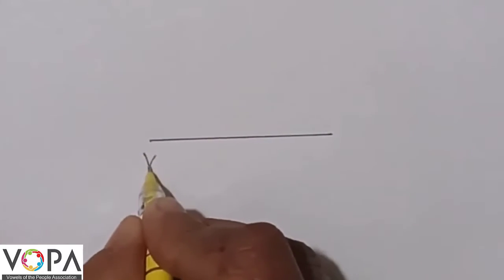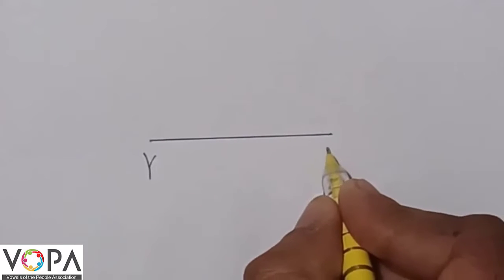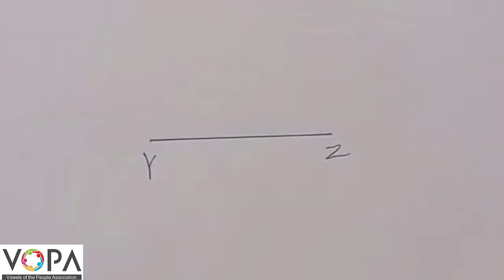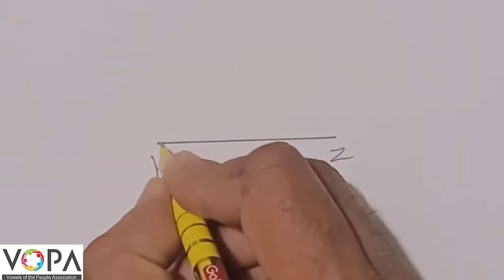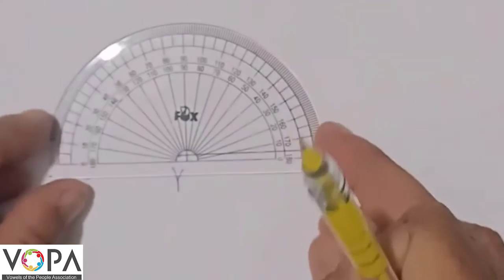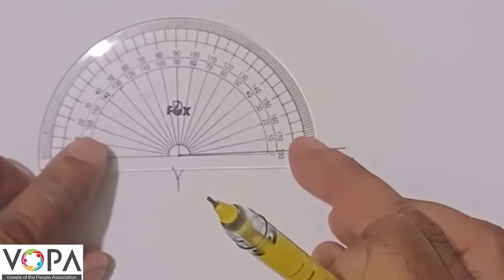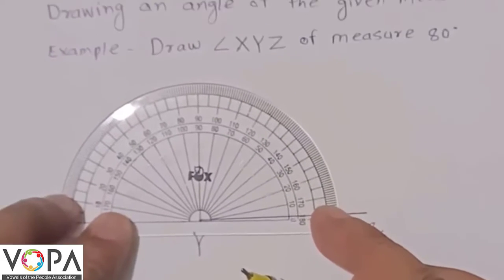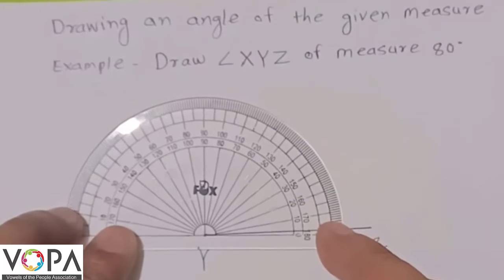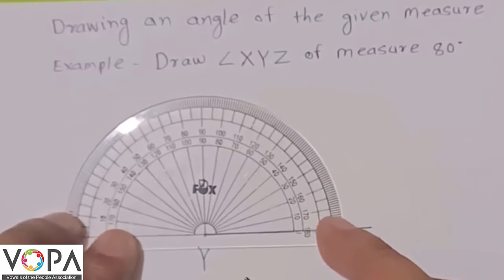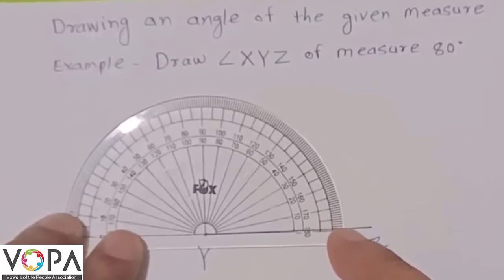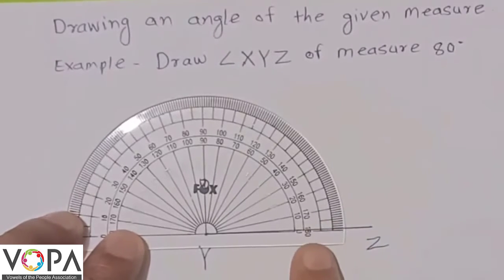Y and here is Z. Point Y is the vertex of angle XYZ. Take a protractor and match the center point of the protractor with Y, then match the baseline with arm YZ.